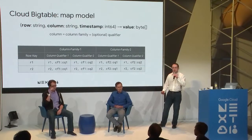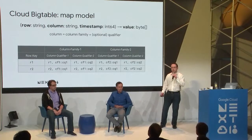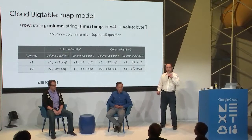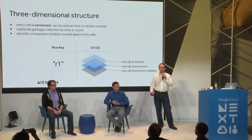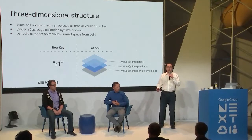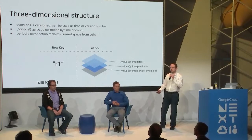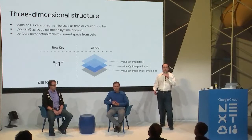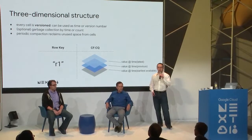Cloud Bigtable supports the multidimensional map model: for a tuple of row (string), column (column family plus optional qualifier), and an int64 timestamp, you retrieve a value — an uninterpreted array of bytes. This gives you a built-in time dimension for time series. While most databases are two-dimensional, Bigtable is three-dimensional — the third dimension is time. Every cell has an arbitrary number of versions with an int64 timestamp attached. You can also enable automatic garbage collection based on time or count, so Bigtable asynchronously removes old data without manual cleanup.